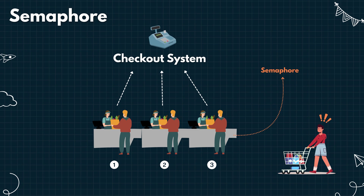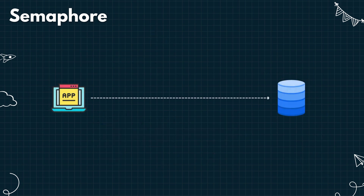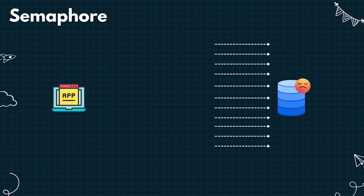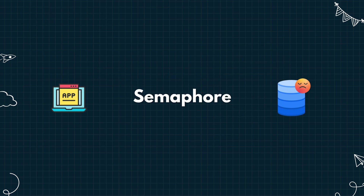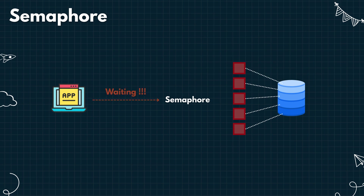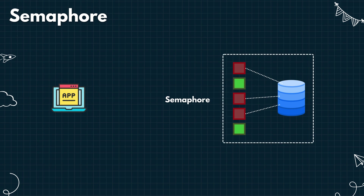Now let's consider a technical scenario. Imagine your application needs to connect to a database, but the database can only handle five connections at a time. If more connections try to come in, the system slows down or fails. To manage this, we can use a semaphore. Whenever a new request comes in, it first asks the semaphore for permission. If one of the five slots is available, the request is allowed to connect. If all five slots are in use, the request simply waits until one becomes free. Once a connection finishes, the slot is released and the next waiting request proceeds. This approach keeps your system responsive and prevents overloading the database.